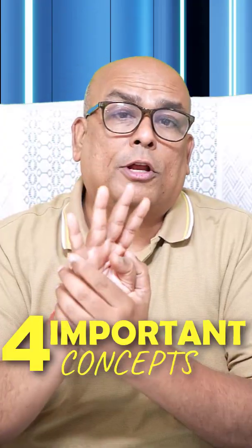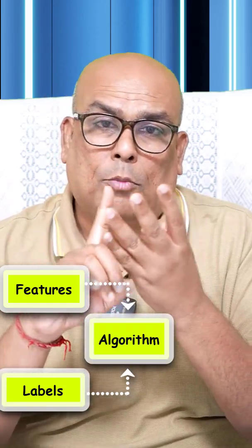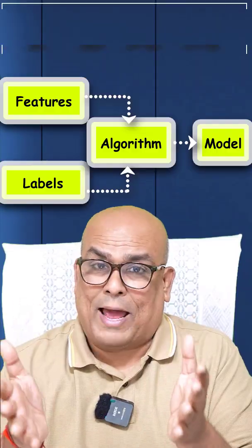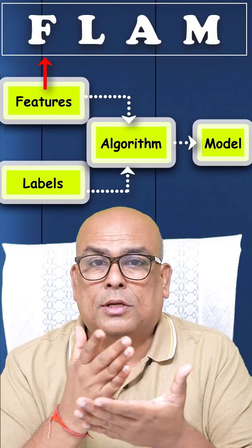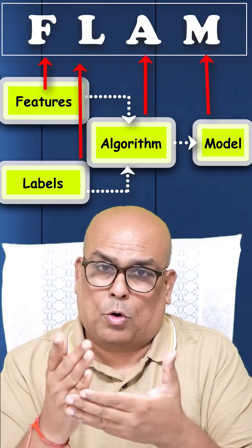The next thing is you need to learn four important concepts. Without these four concepts your journey of machine learning cannot start. Features, Labels, Algorithm and Models. If you want to remember them you can use the acronym FLAM — Features, Labels, Algorithm and Models.